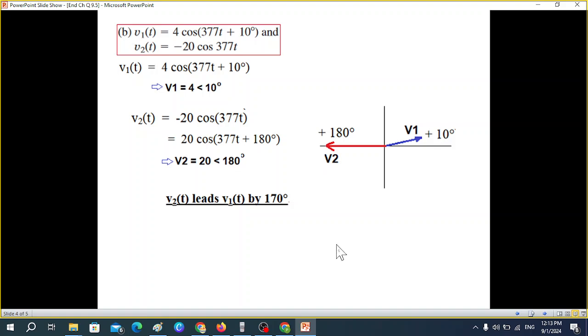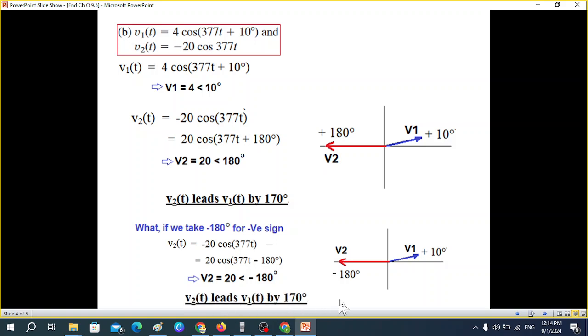Now a question might come into your mind: what if we had taken minus 180? So let's see what will happen. If you take minus 180 for the negative sign, we can take phasor. Same thing, only the sign changes. And we can plot it. This is 10 and this is minus 180. So we go this way minus 180 and plot. And you can see these two are the same signal basically. Same location, same position. And to find leading and lagging, we go to the positive direction or the anticlockwise direction. And we can see that V2 is leading V1. So same answer: V2 leads V1 by 170.